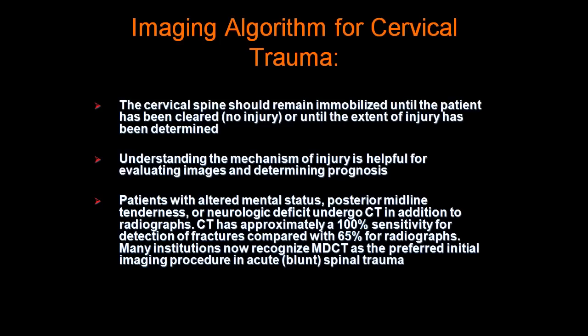An imaging algorithm for cervical spine trauma is that the cervical spine should remain immobilized until the patient has been cleared, or until the extent of injury has been determined. Understanding the mechanism of injury is helpful for evaluating images and determining patient prognosis. Patients with altered mental status, posterior midline tenderness, or neurological deficits undergo CT scans in addition to radiographs. CT scans have approximately 100% sensitivity for detection of fractures compared with 65% sensitivity for radiographs. Many institutions now recognize CT as the preferred initial imaging procedure in acute spinal trauma.